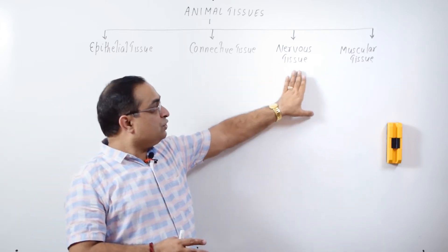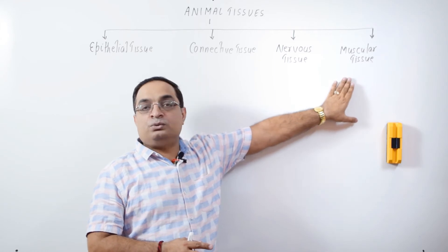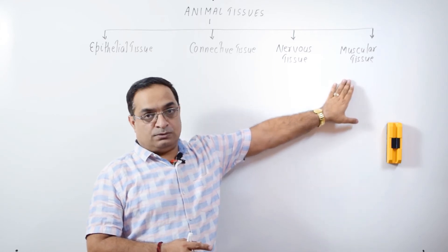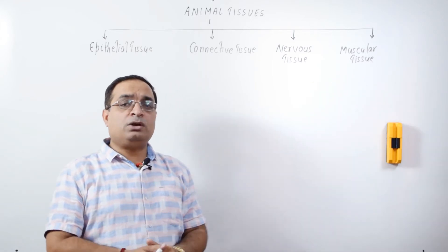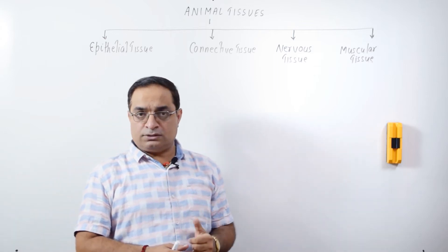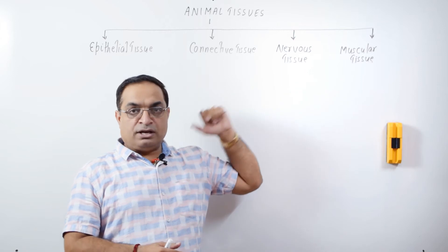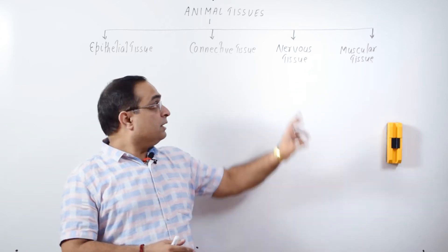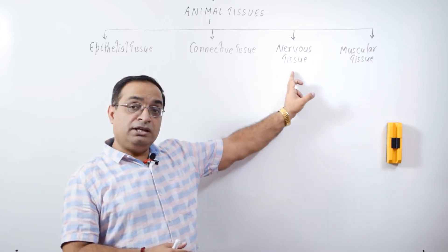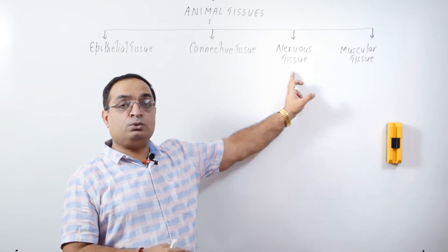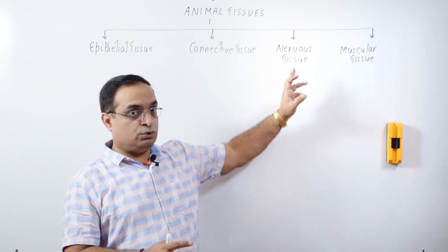Nervous Tissue and Muscular Tissue are two excitable tissues. Excitable means when you give a stimulus, the tissue responds. Nervous Tissue is present in our nervous system. Nervous Tissue not only includes neurons, it includes neuroglial cells also which we will discuss in detail.